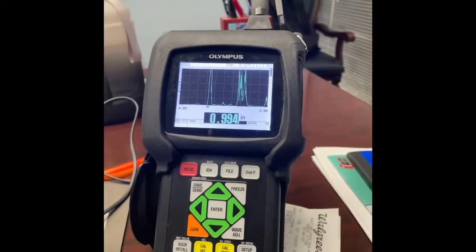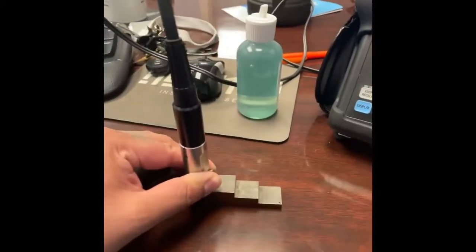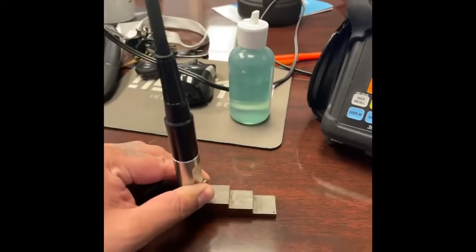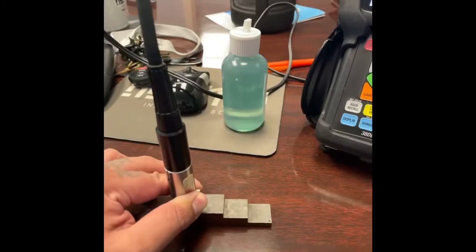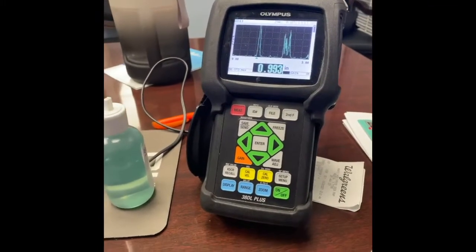Because as the material gets thicker, especially with dual elements, you can possibly have mode converted shear waves. And that will actually show our thickness as one and a half times than the actual thickness that it is.